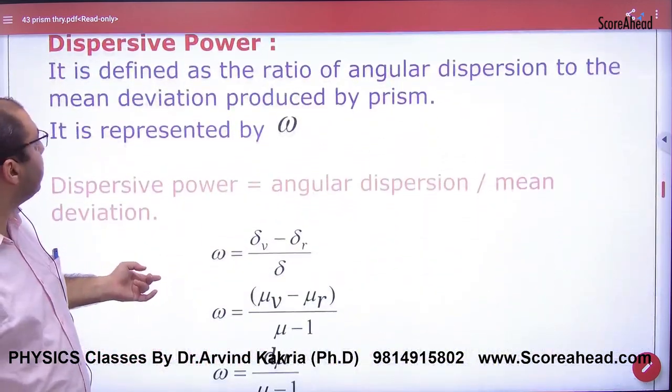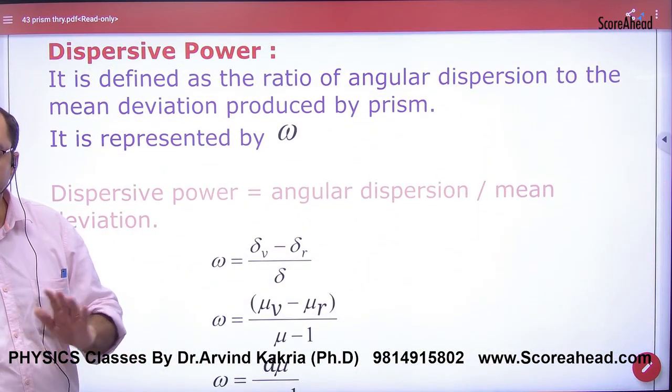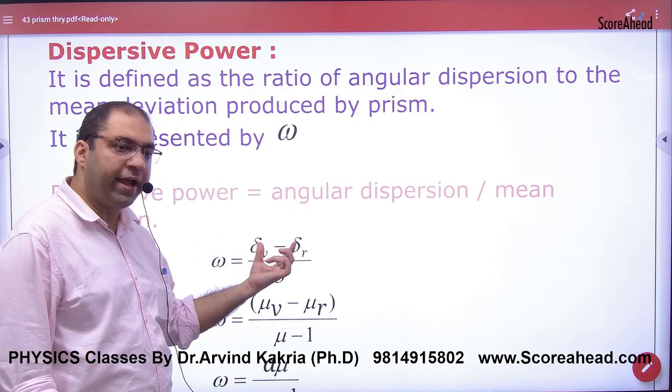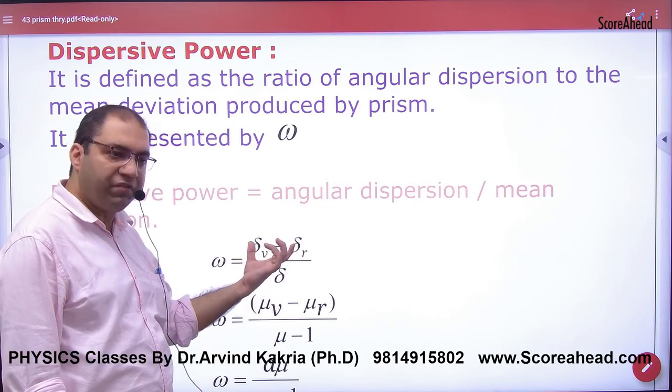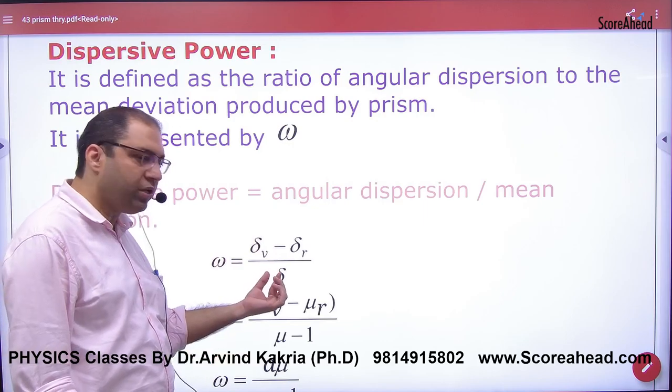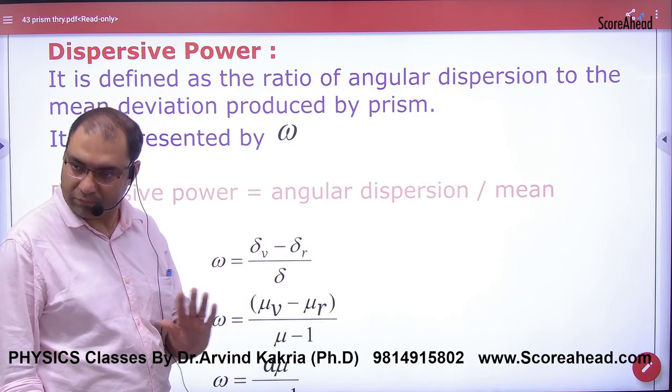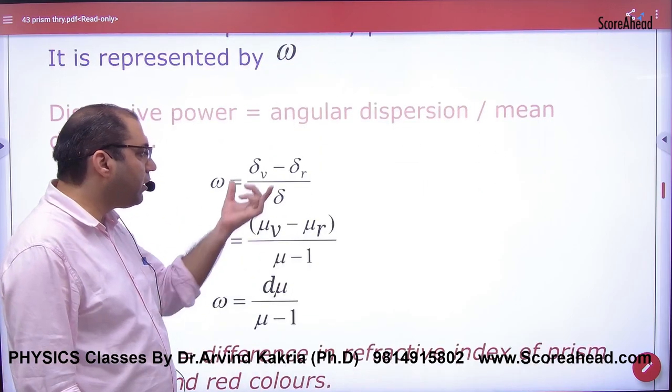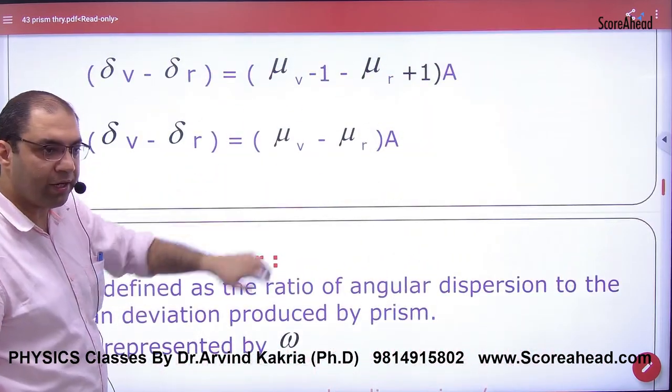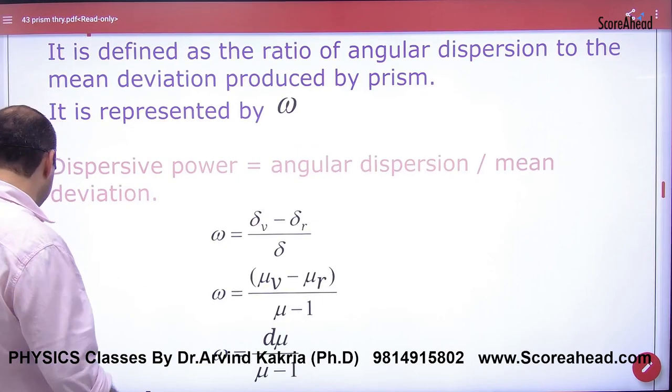So what will I make? Dispersive power is the ratio of angular dispersion. We have removed angular dispersion as the difference of deviation of violet and red, divided by mean deviation. What is mean deviation? Delta. So in this term, we have solved this.